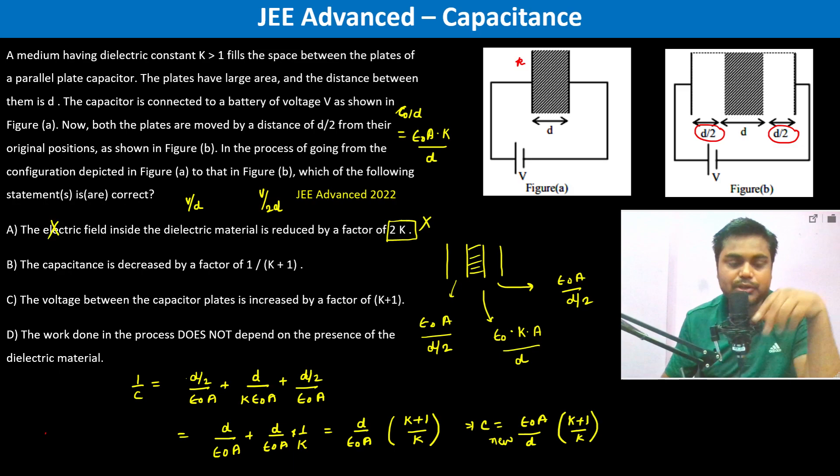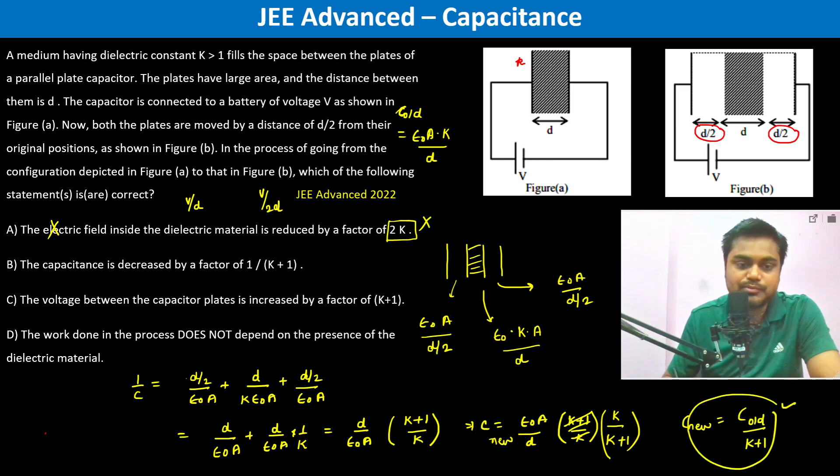The capacitance is decreased by a factor of 1/(k+1). Oh yes, here I have done wrong, so it should be k/(k+1). And yes, therefore C_new equals C_old divided by (k+1). So that's true.